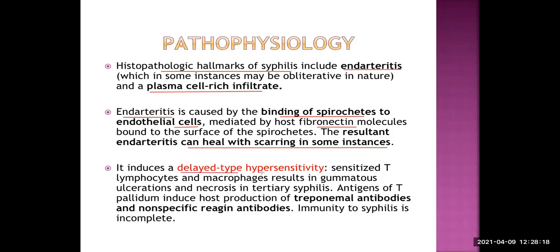Syphilis induces a delayed type of hypersensitivity — type 4 hypersensitivity reaction — where sensitized T lymphocytes and macrophages result in gumma formation. This gumma or gummatous ulceration and necrosis are the hallmarks of tertiary syphilis. They are not commonly seen in primary or secondary syphilis, but in tertiary syphilis — cardiovascular syphilis, neurosyphilis, or bone involvement — gummas are commonly found.